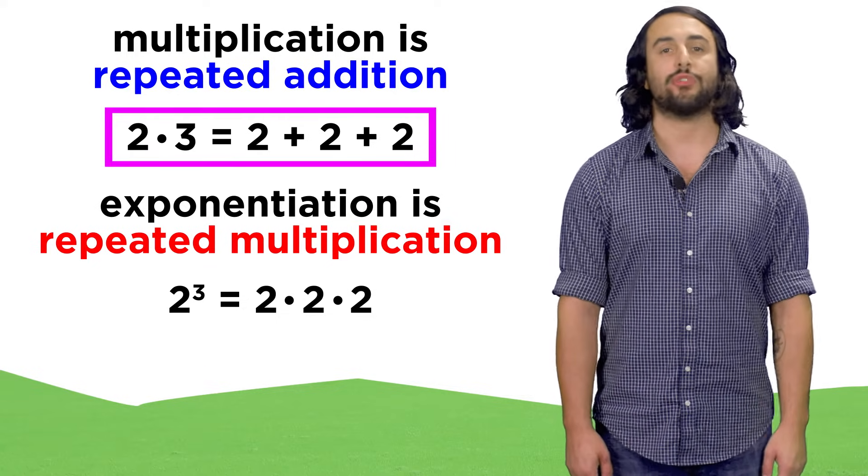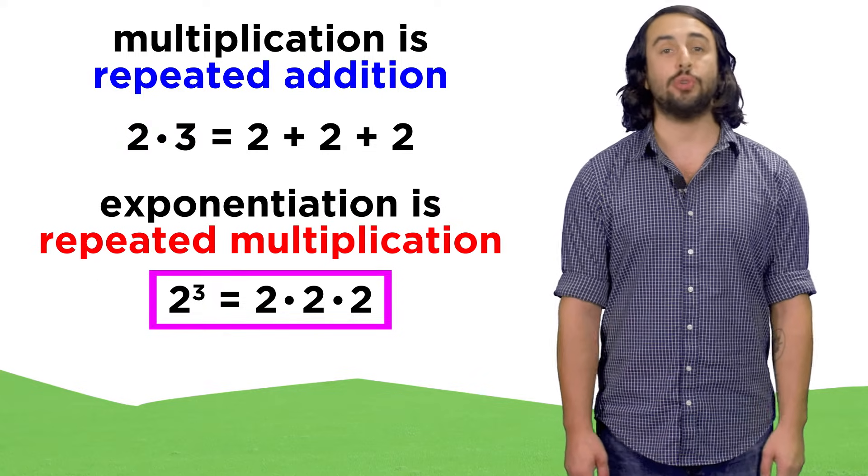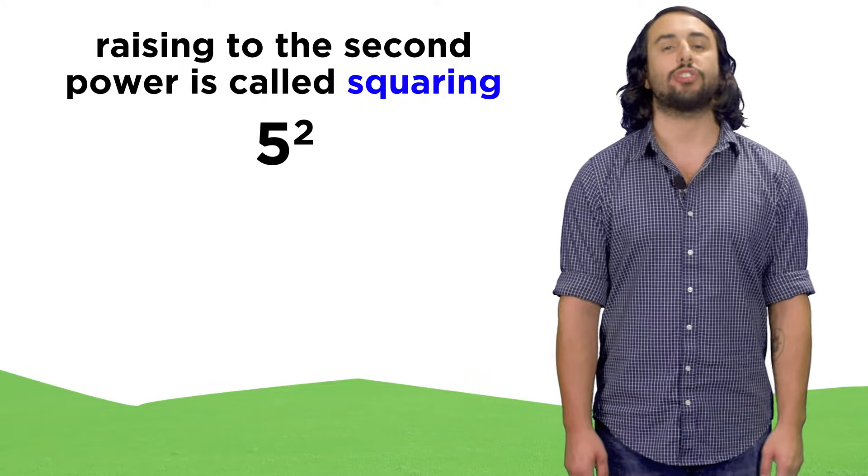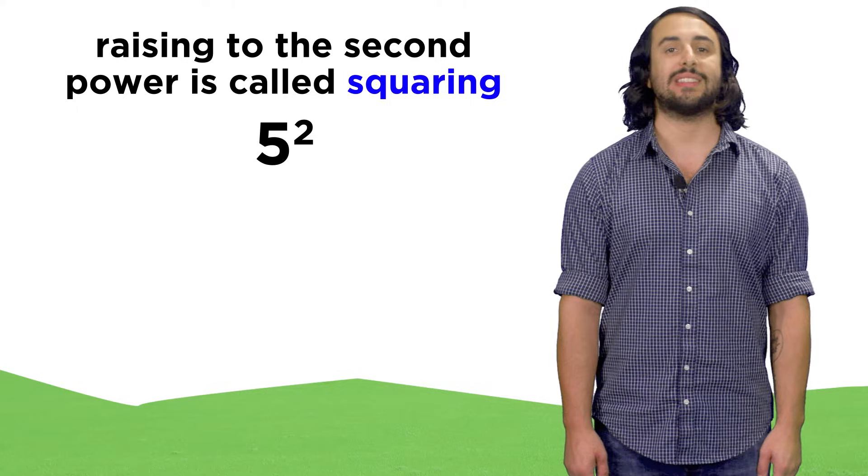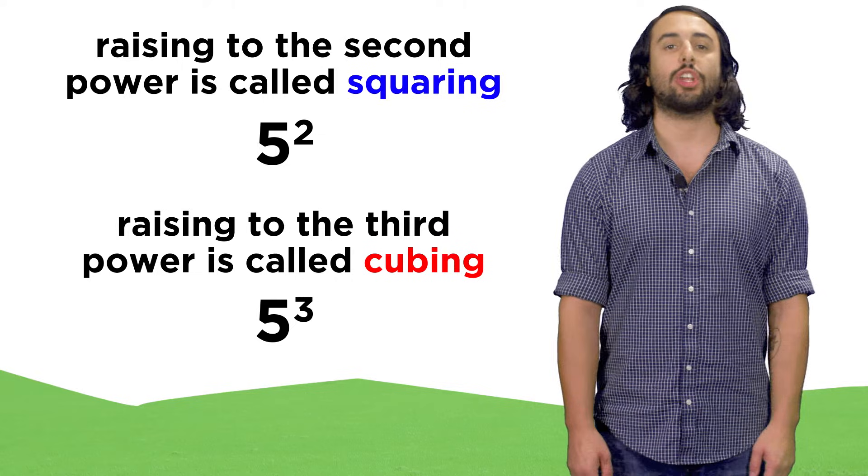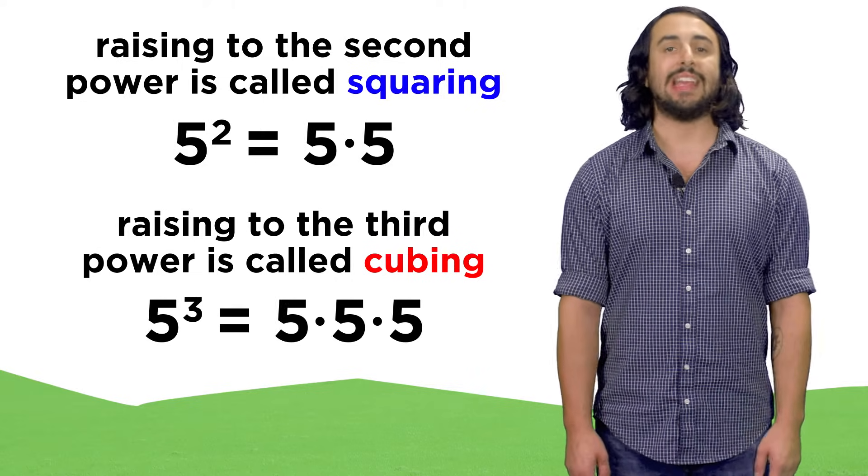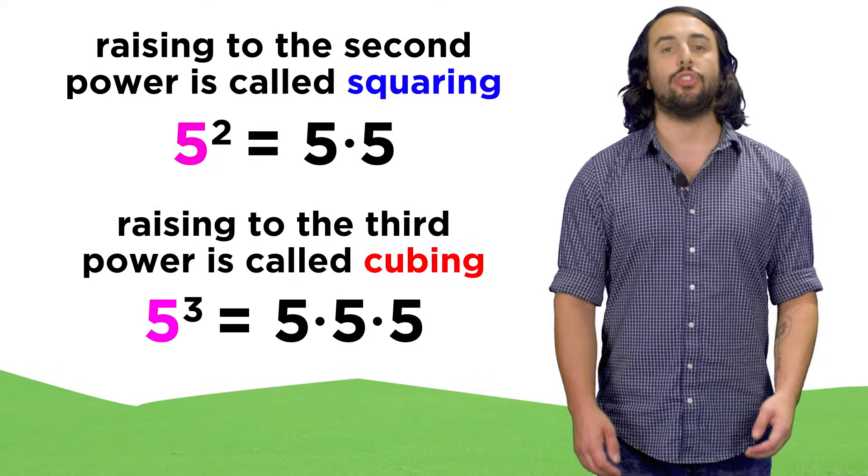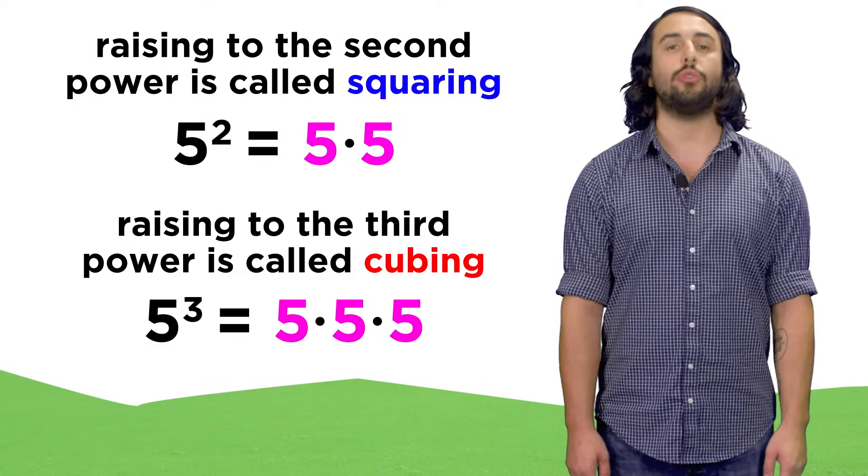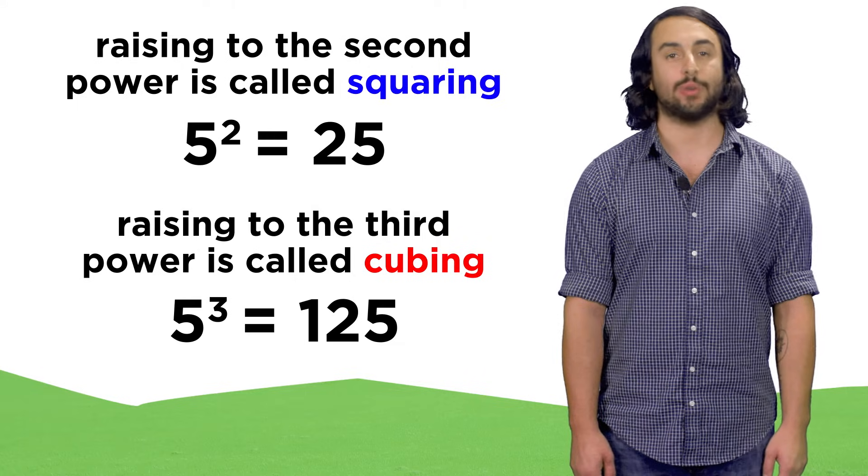Two times three is really two plus two plus two, while two to the third power is two times two times two. When we raise something to the second power, we are squaring that number, so we can say five squared. When we raise something to the third power, we are cubing that number, so we could say five cubed. In each case, we can write down the base number the number of times indicated by the exponent and do the multiplication, which gives us twenty-five and one hundred twenty-five respectively.